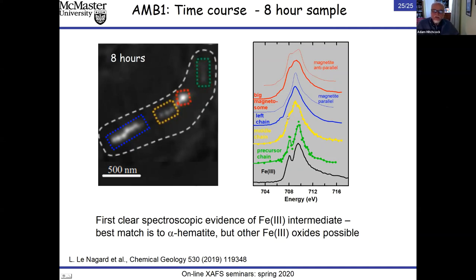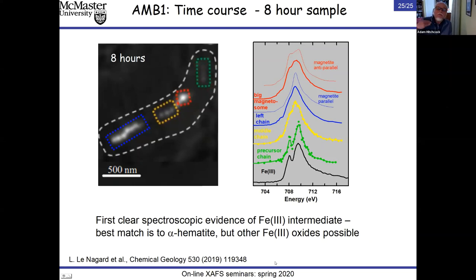A single cell measured in November 2017 by graduate student Lucas shows the whole story: outlined by the cell boundary, blue and red areas match magnetite spectroscopy very well. A fainter area with less iron shows more of the 708.2 eV peak. Precursor regions shown in green show a prominent 708 eV peak characteristic of iron(III)—a hematite-like spectrum. This confirms, consistent with hard X-ray iron K-edge and Mössbauer studies, that the system goes through an iron(III) intermediate before incorporating iron(II) to form magnetite. We hope to continue this at higher spatial resolution using ptychography.